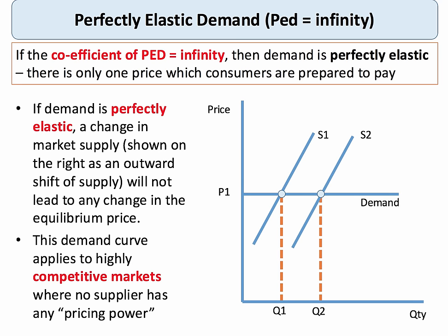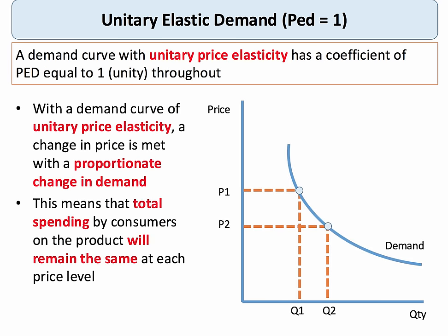The other extreme is a perfectly elastic demand curve with an elasticity coefficient of infinity. In this situation the business can only sell at one price. A shift in the supply curve doesn't cause any change in the market price, though total revenue goes up. There is also a non-linear unitary elastic demand curve, where the percentage change in price is the same as the percentage change in quantity demanded, so the area underneath the demand curve is the same throughout. When elasticity of demand equals one, total revenue stays the same when there's a price change.